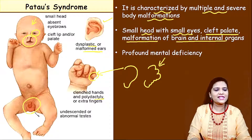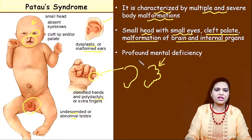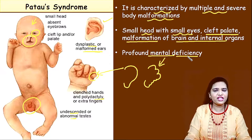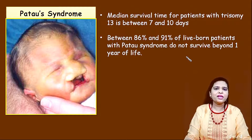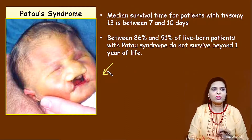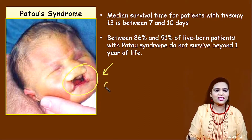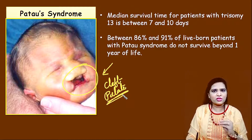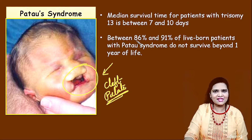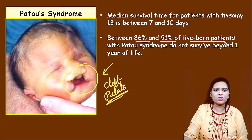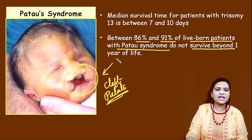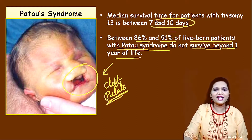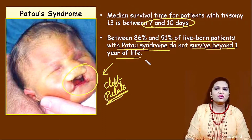The testes are undescended and the sex organ is abnormal. Mental deficiency will be present. For a child born with Patau syndrome, the maximum survival duration is about one year. Statistics show that 86 to 91 percent of live-born patients with Patau syndrome do not survive beyond one year of life — usually they die around 7 to 10 days after birth.